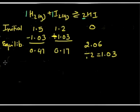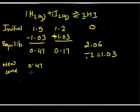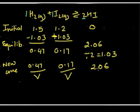Now we need to work out the new concentrations. We are not given a numerical volume, just volume V. So the concentrations are: hydrogen = 0.47/V, iodine = 0.17/V, and HI = 2.06/V.